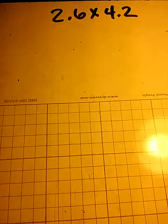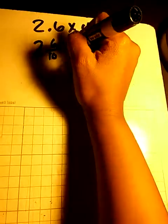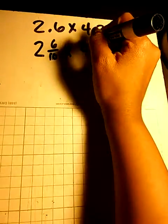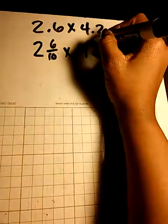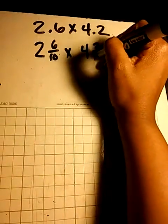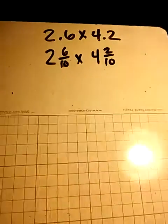Let's multiply 2 and 6 tenths times 4 and 2 tenths. Let's use our knowledge of fractions. So we have 2 and 6 tenths times 4 and 2 tenths.